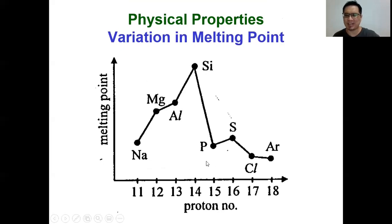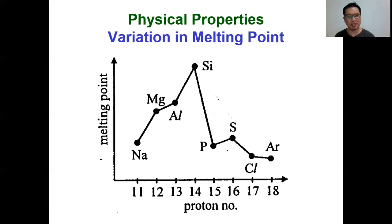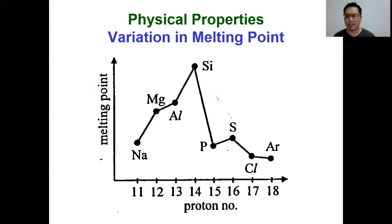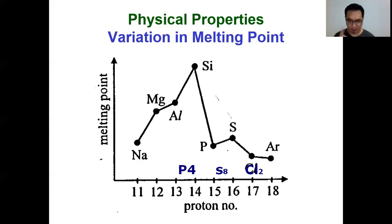If you look at the pattern of melting points of phosphorus, sulfur, and chlorine, you'll notice that sulfur actually has a higher melting point compared to phosphorus and chlorine. What's the reason? Phosphorus actually exists as P4 - four phosphorus atoms bonded together - rather than as single atoms. Sulfur exists as S8 - eight atoms bonded together. Chlorine exists as a diatomic molecule, Cl2. So we have P4, S8, Cl2 - all existing as simple molecular structures bonded together by induced dipole-dipole attraction within the lattice structure.